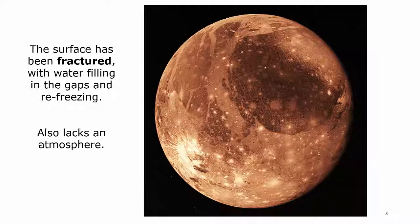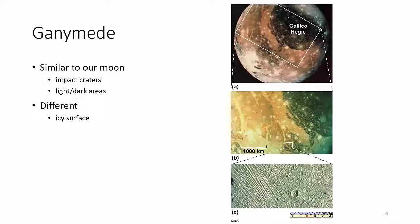We also know that this moon doesn't have an atmosphere. Ganymede looks similar to our moon in that it has impact craters, light areas, and dark areas. The key difference, though, is that rather than rock on the surface, it's ice — so the ice has craters and lighter and darker parts.